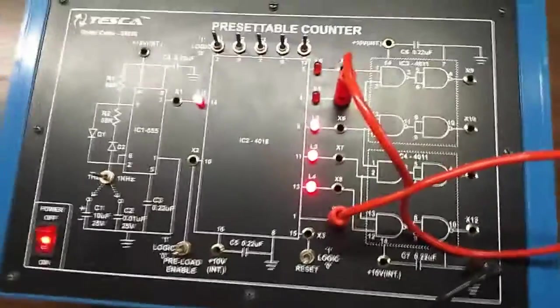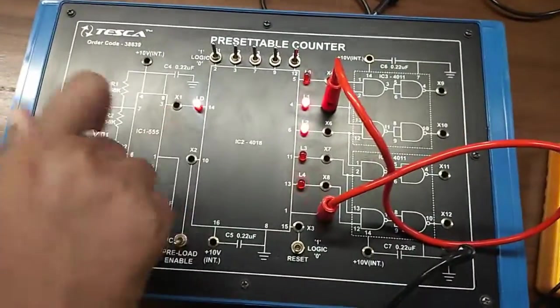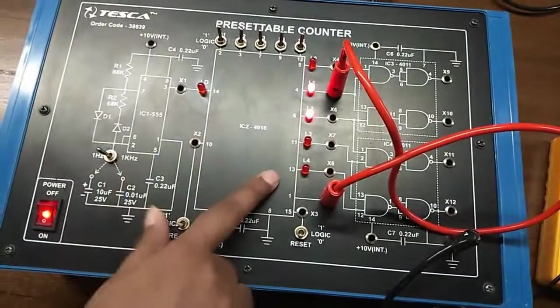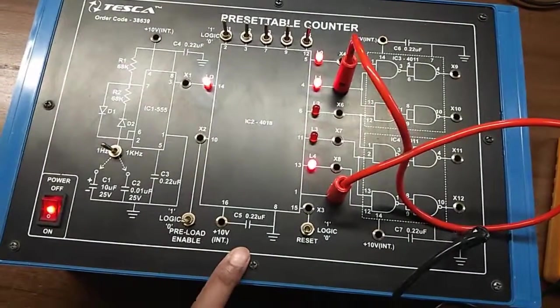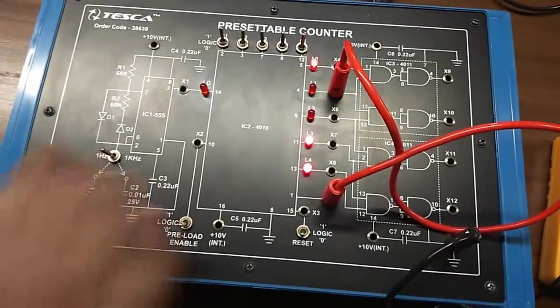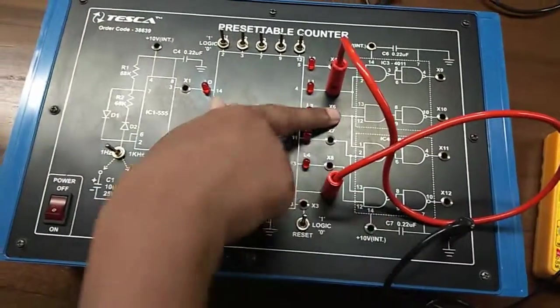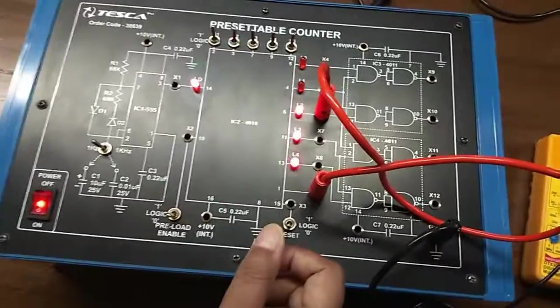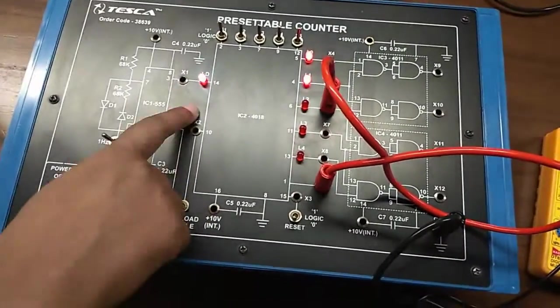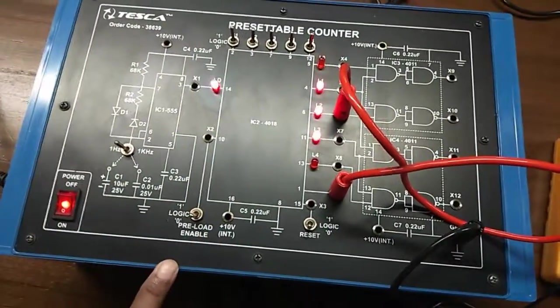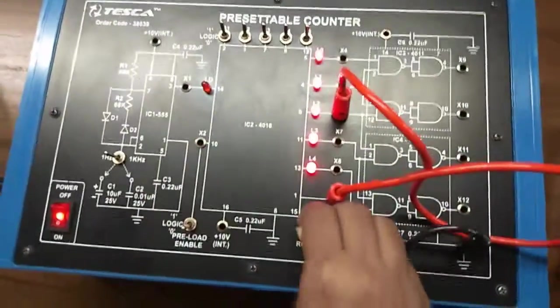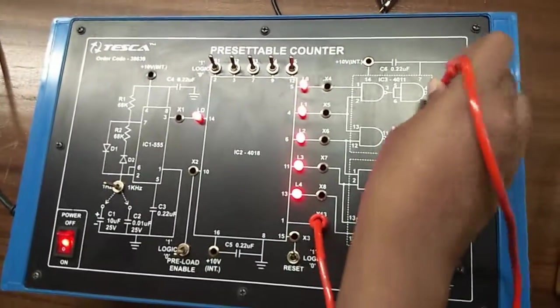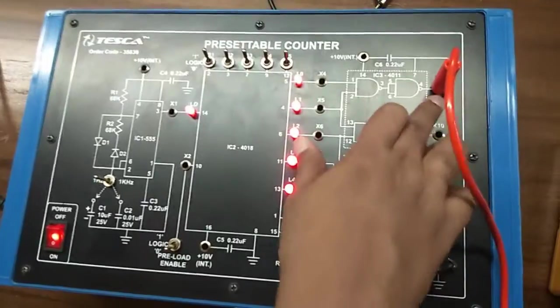Now observe the blinking of LD and this LED. Now short X6 to X13 and observe the blinking of LD and these LEDs. Similarly, we can short X13 to X9, this will be divide by 3 mode.